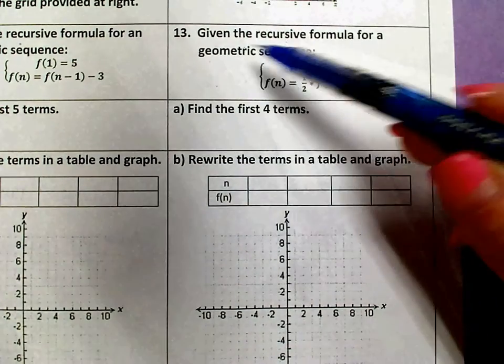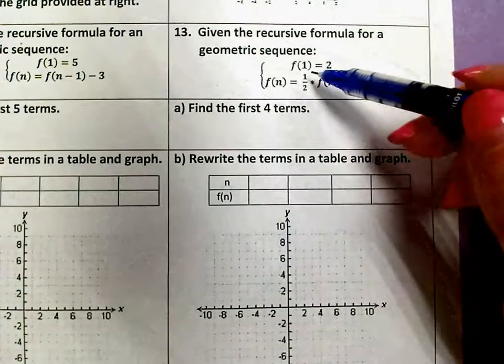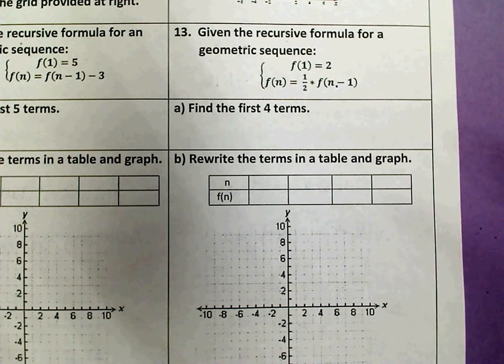So now we have a recursive formula for a geometric sequence, which the geometric just means that it's multiplied by something every time instead of having something added or subtracted.